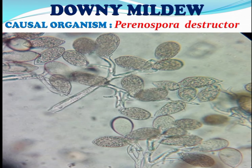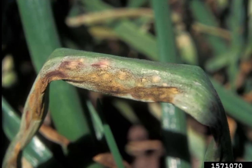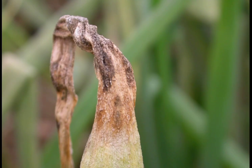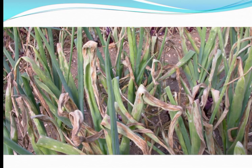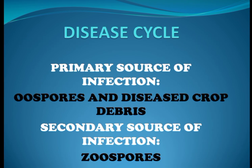The last disease is Downy Mildew, which is caused by Peronospora destructor. Symptoms: At the field level, symptoms of Downy Mildew are first noticed as circular patches of yellowed plants that are a few to many feet in diameter. As the disease progresses, the yellowing pattern often enlarges in the direction of prevailing winds. On individual plants, leaf tissue becomes pale green, then tan to brown or yellow, and finally collapses. Lesions may exhibit a violet to purple color. In addition to leaves, the Downy Mildew pathogen can infect seed stalks, flower parts, and can infect bulbs systemically. Favorable Conditions: Leaf wetness and high humidity are conducive for infection. Disease Cycle: Oospores in diseased crop debris are the primary source of infection, and the secondary source of infection is zoospores.